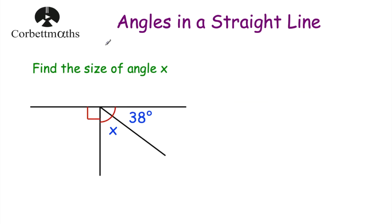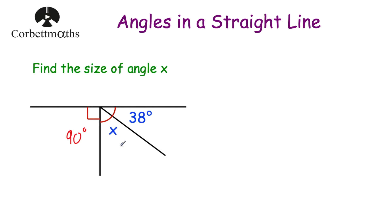Let's have a look at our next example. We've got a straight line and we've got three angles: 38 degrees, x, and this right angle symbol. If you need a recap on right angles, go to codemavs.com and watch the video called Types of Angles — it explains that symbol is a 90 degree angle. So I like to write 90 degrees beside it. To work out angle x, we'll add 38 degrees and 90 degrees together, then take that away from 180 degrees.